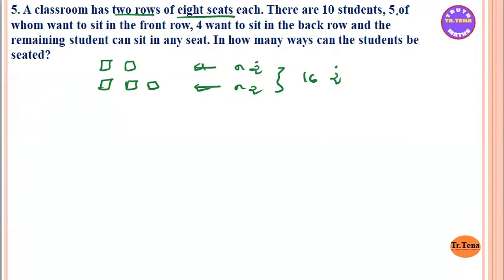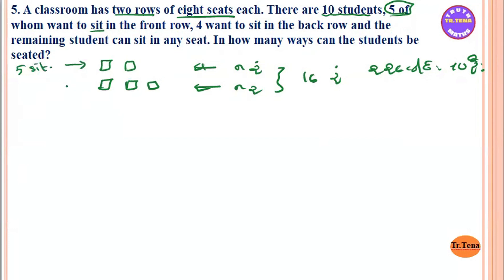There are 10 students. Five of them want to sit in the front row. Four of them want to sit in the back row. The remaining Romanian students can sit in any seat.